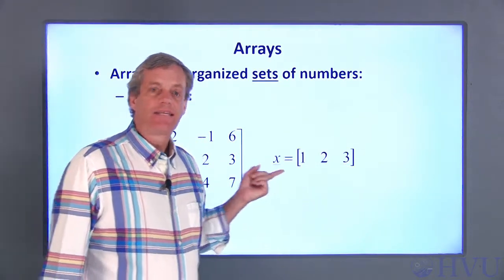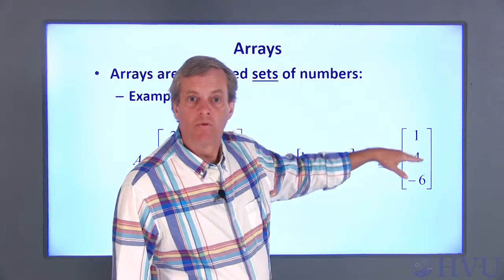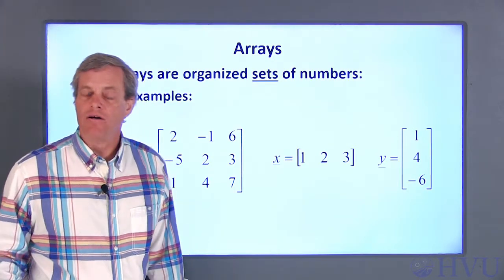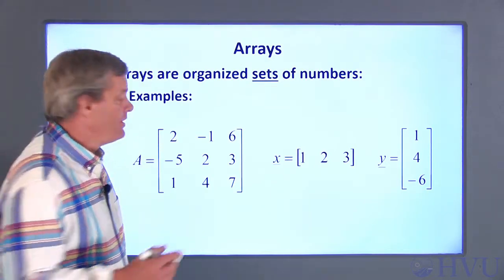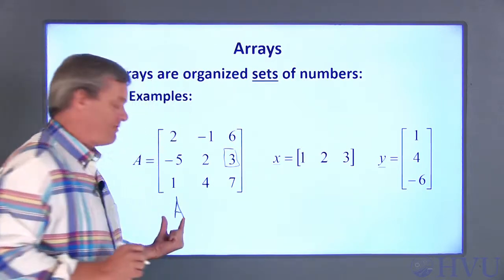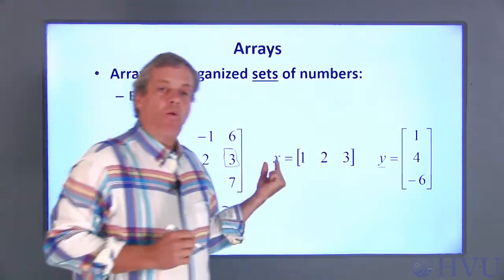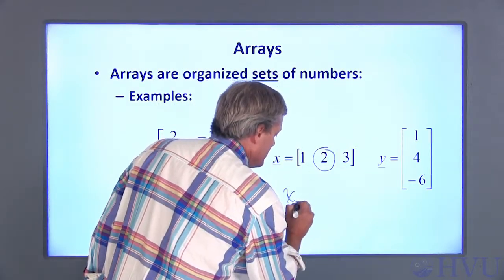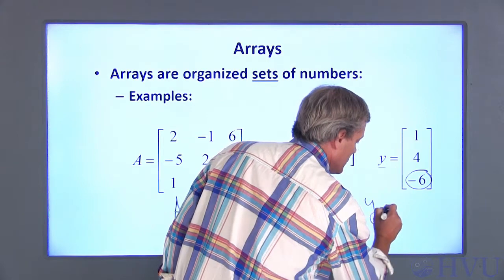The array X has a single row containing three numbers in three columns. The array Y is also three numbers in a single column with three rows. Individual numbers in the arrays are typically specified by the row and column in which they're found. The row and column numbers are indicated as subscripts separated by commas following the variable name. For example, the element of A in the second row and the third column is three — identified as A subscript 2,3. One-dimensional arrays can be specified by one subscript, so X sub two is two, while the third element in the Y vector is negative six.